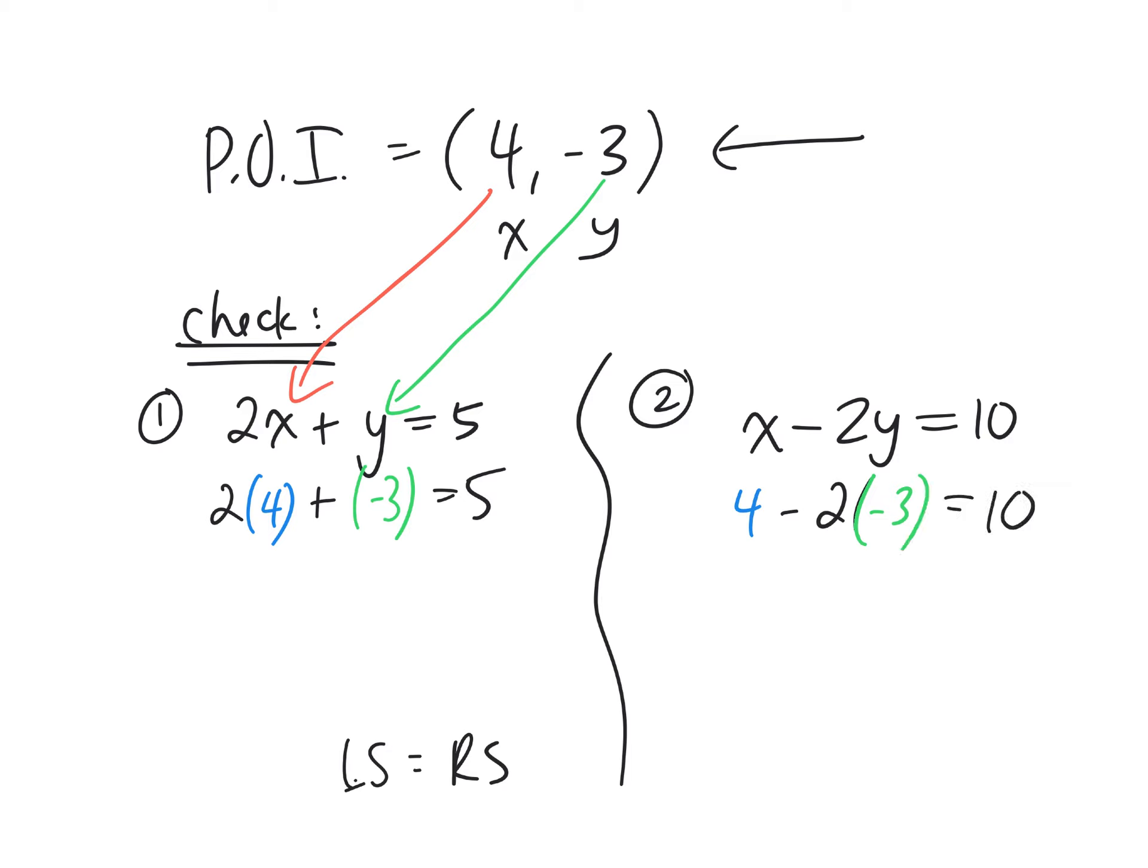2 times 4? 8 take away 3. 5 equals 5. It works. It balances. So this point is a solution to this linear equation. It is a point on the line.